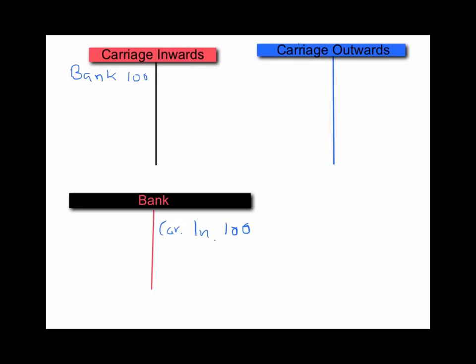And similarly, if we deliver goods to our customer and we're kind enough to pay for that delivery either through a courier or by delivering it ourselves through our delivery van, it's the same double entry except into a different account. Let's say we sold a few toy trains and we had to pay $50 worth of petrol, or even a courier $50 to deliver — then we would put that into our carriage outwards account.